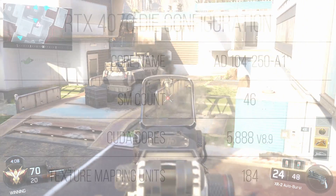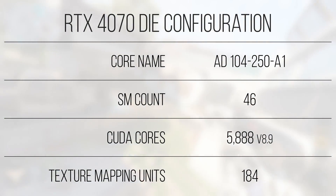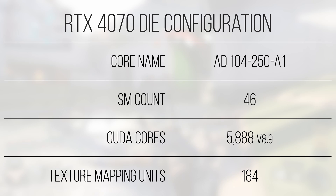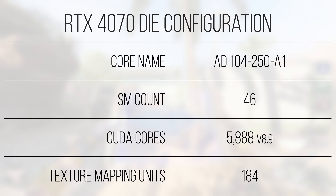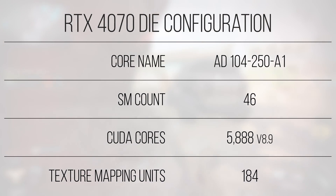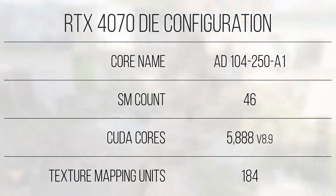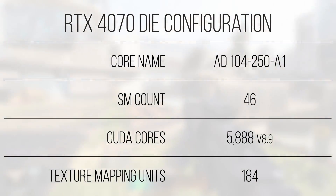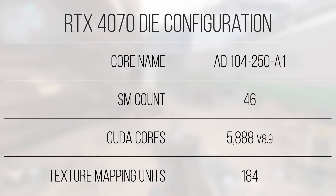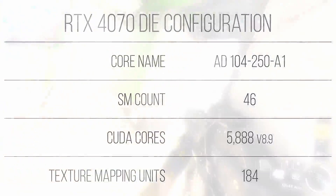Let's take a look at the actual die configuration of the 4070. With a cut-down AD104-250-A1 graphics processing unit, the die features 5,888 CUDA cores comprising 46 total SMs. While the definition of a CUDA core has changed over the years, it's generally accepted that the single precision floating point data path is the actual core, and the integer one is simply an execution port within that core. If the 4070 was using the Turing microarchitecture, it would probably be counted as a 2,944 core chip, simply because back then the CUDA core comprised both the FP and ALU circuitry. This change in architectural definition evidently allows the GPU to perform significantly better, and is why Nvidia markets these cards with such a high number of CUDA cores.